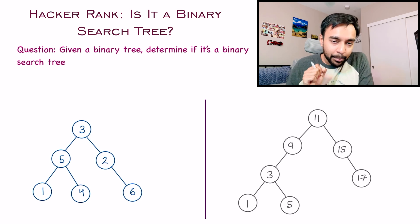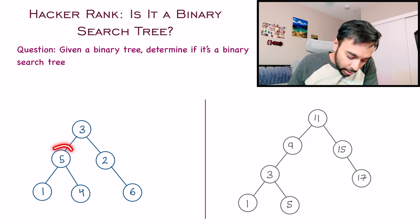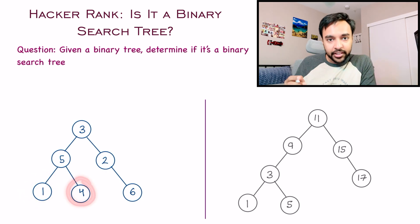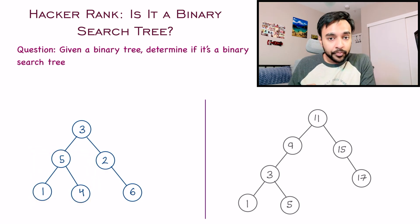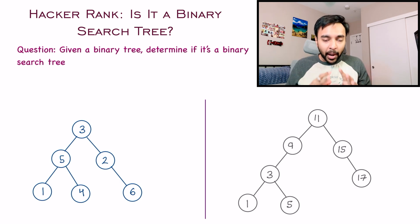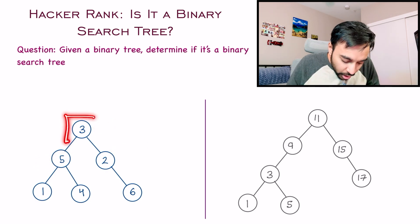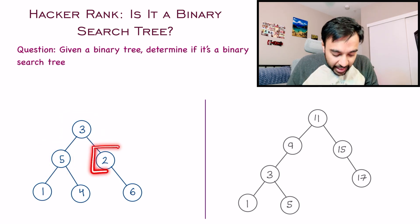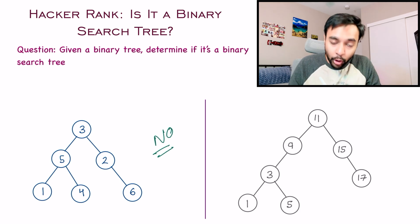Let us understand this with two example test cases. In test case number one, when I look at node number five, on the left I have a smaller node that is one, and on the right I have a larger node that is four. So this node is satisfying the criteria of a binary search tree. But for this complete tree to be a binary search tree, each of these nodes should satisfy this criteria. If you look at the node with value three, on the left I have a larger value — that is five — and on the right I have a smaller value — that is two. So this means that this tree is not a binary search tree, and you have to return no as your answer.